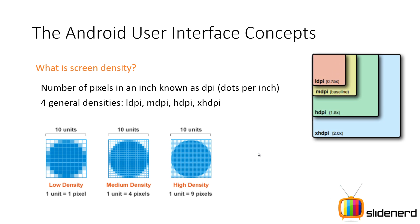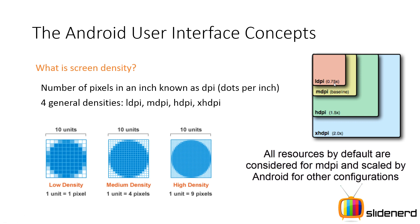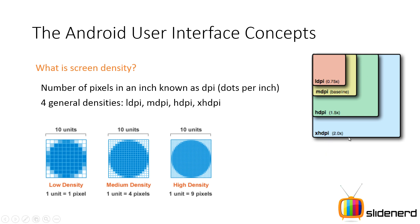When you give units in DP or device independent pixels, for LDPI the DP value is multiplied by 0.75 to give you actual pixels. For MDPI it is multiplied by 1. For HDPI it is multiplied by 1.5, and for XHDPI it is multiplied by 2.0. Android wants you to specify sizes in device independent pixels, and these DP values are multiplied by the appropriate factor for each device, so you don't have to worry about how things look on different screens. That is the best part about screen density in Android.